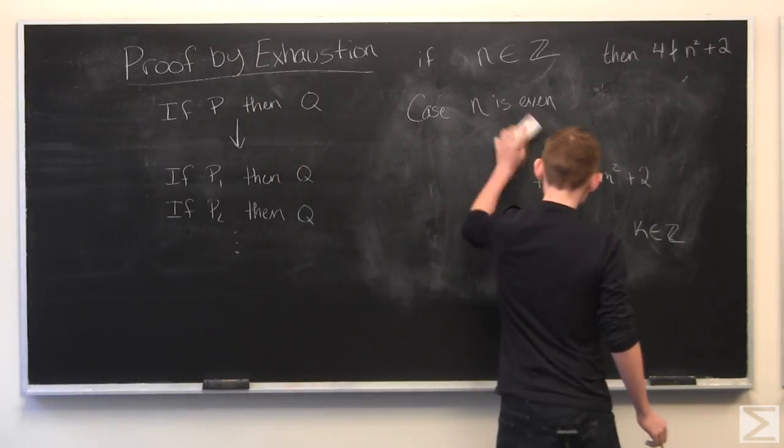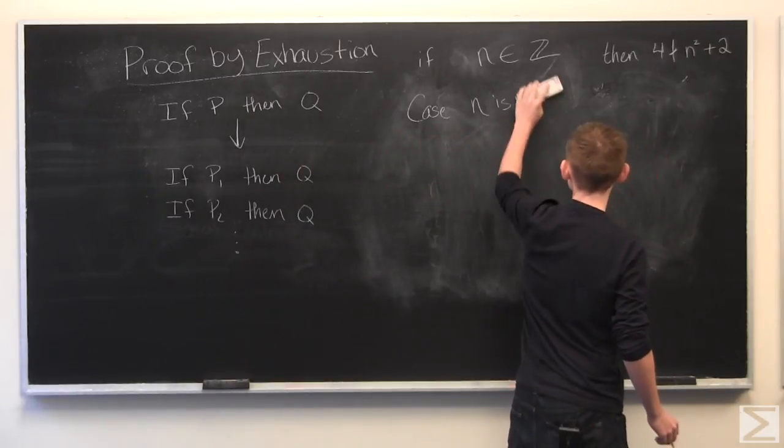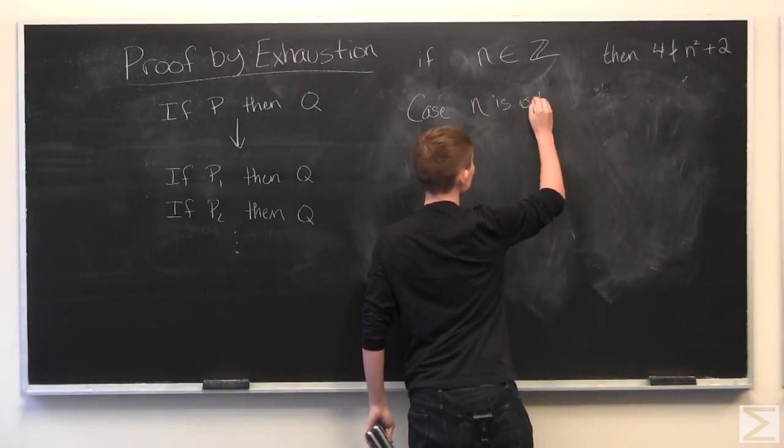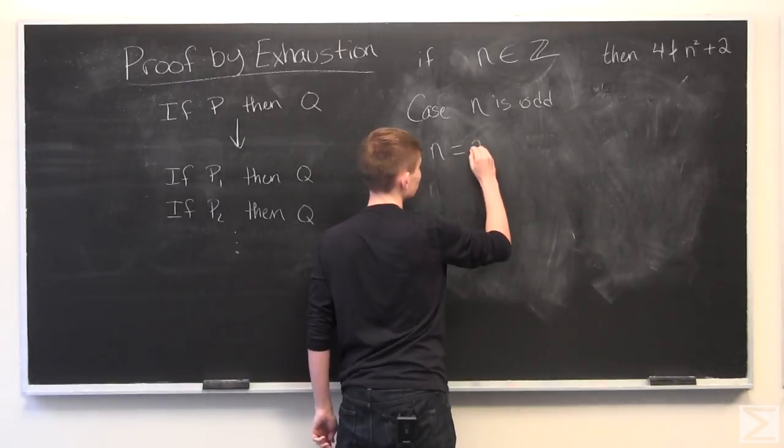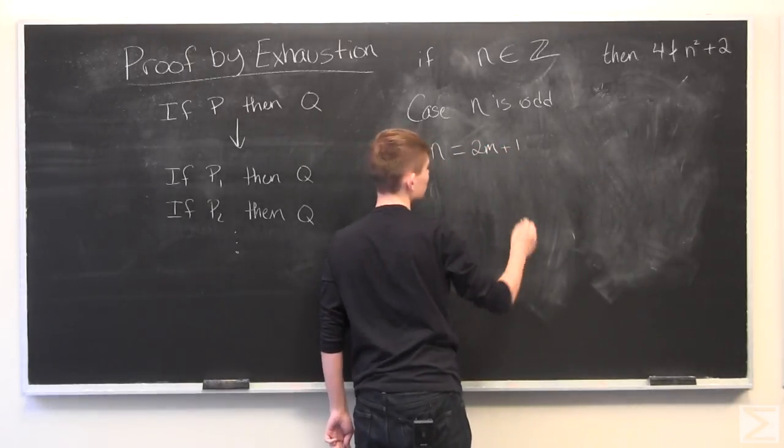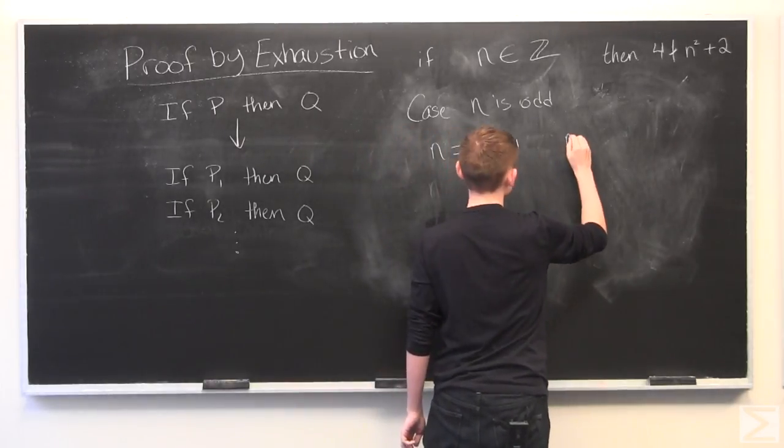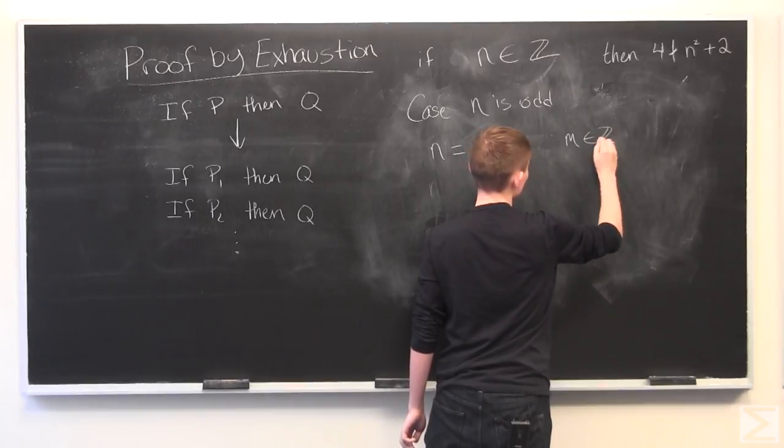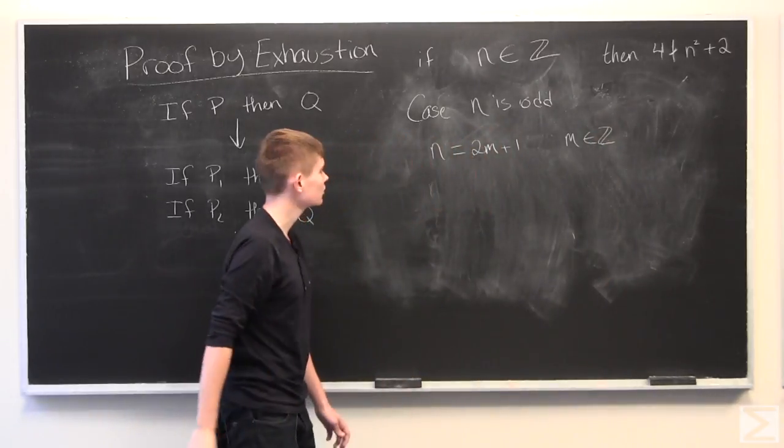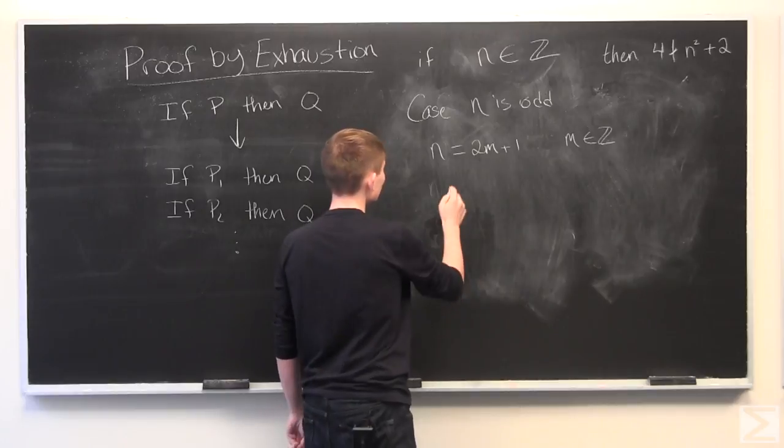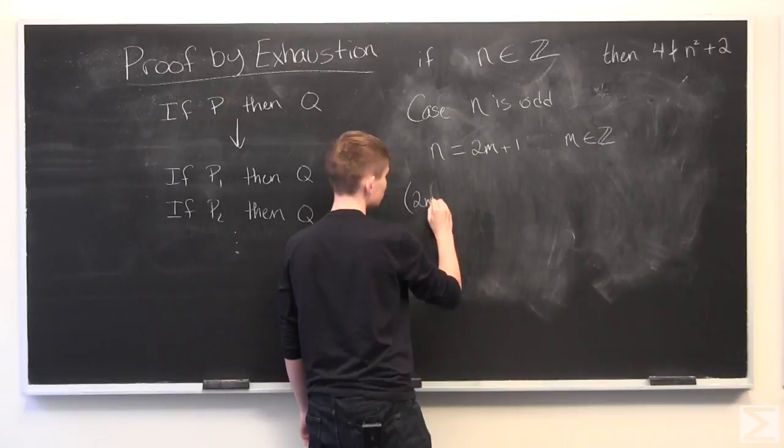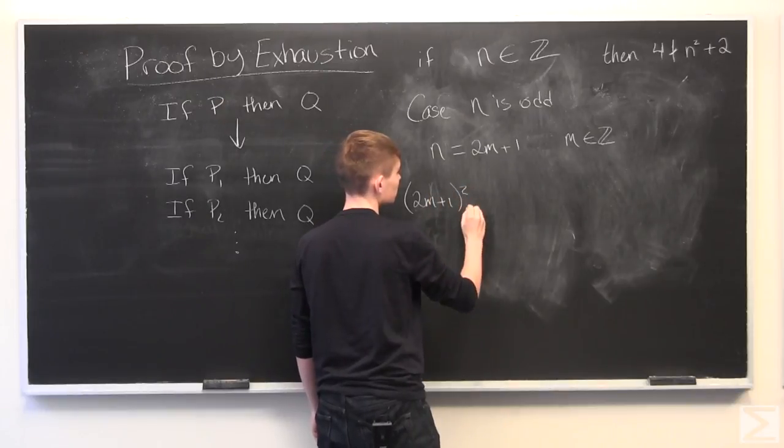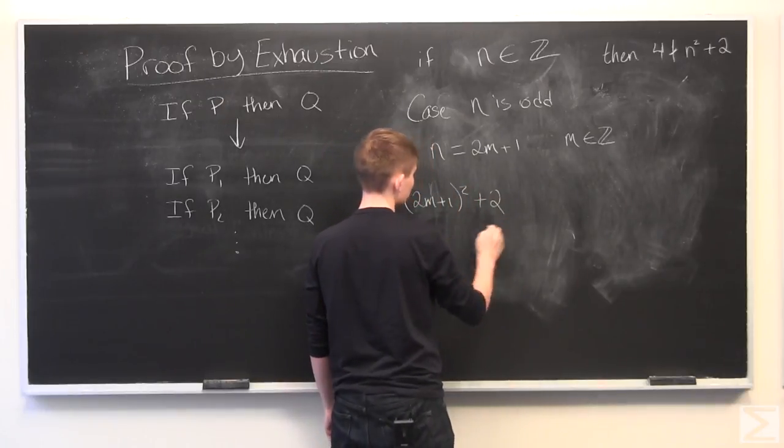So let's look at when N is odd. And we'll define N equal to 2M plus 1, where M is, again, just an integer. So, plugging it into N squared plus 2, we get 2M plus 1 squared plus 2.